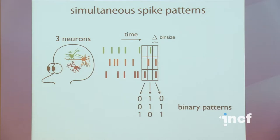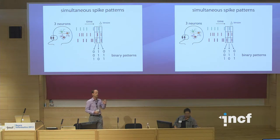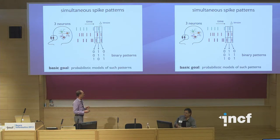I'm going to represent these patterns as binary vectors. In this last bin, I have no spike, spike, spike — so that's 0, 1, 1. The previous time bin: spike, spike, no spike — that's 1, 1, 0. I'm taking the raw data and reducing it to a sequence of binary patterns. For this talk, we're going to ignore the time structure of this data and really just look at modeling these binary patterns.